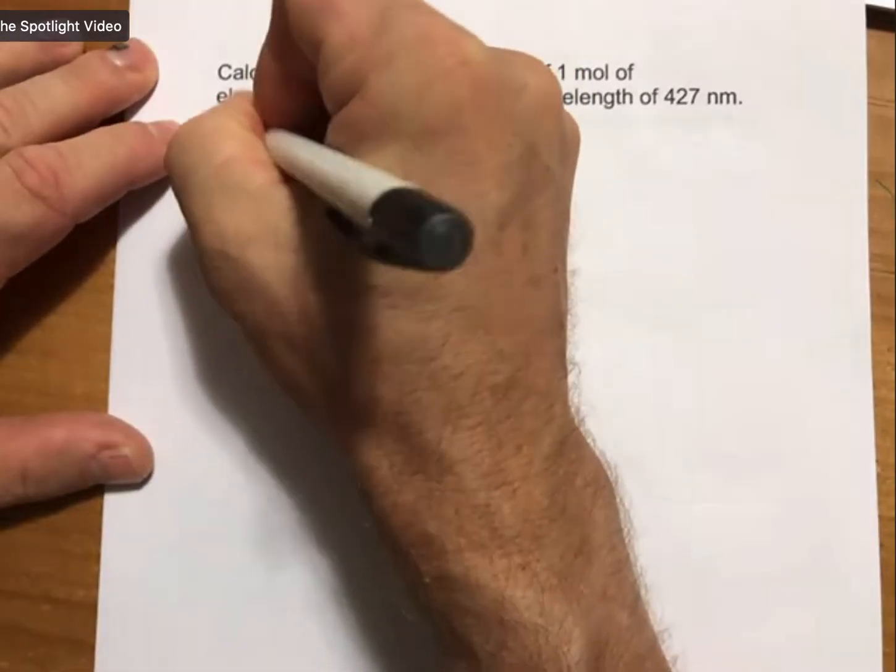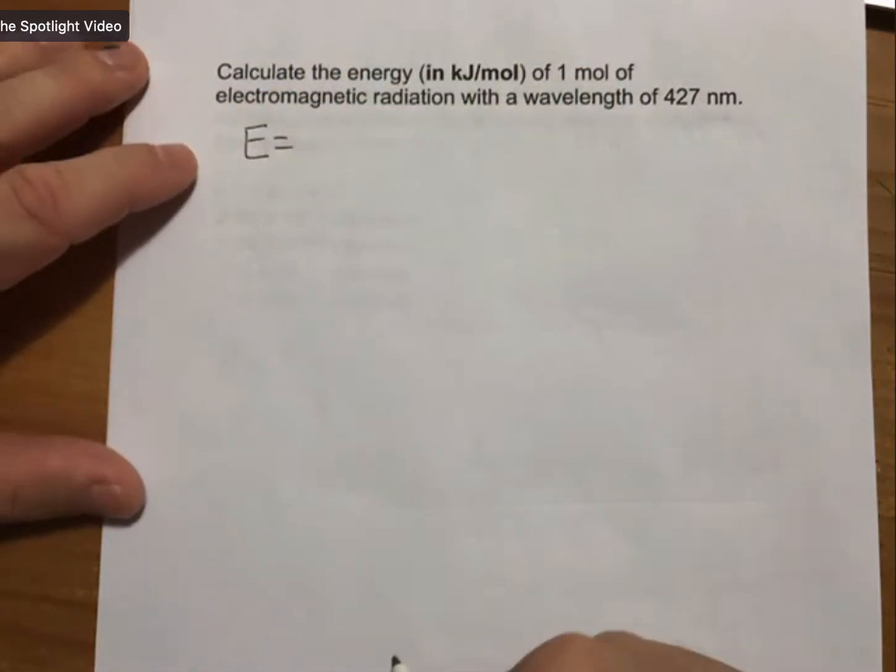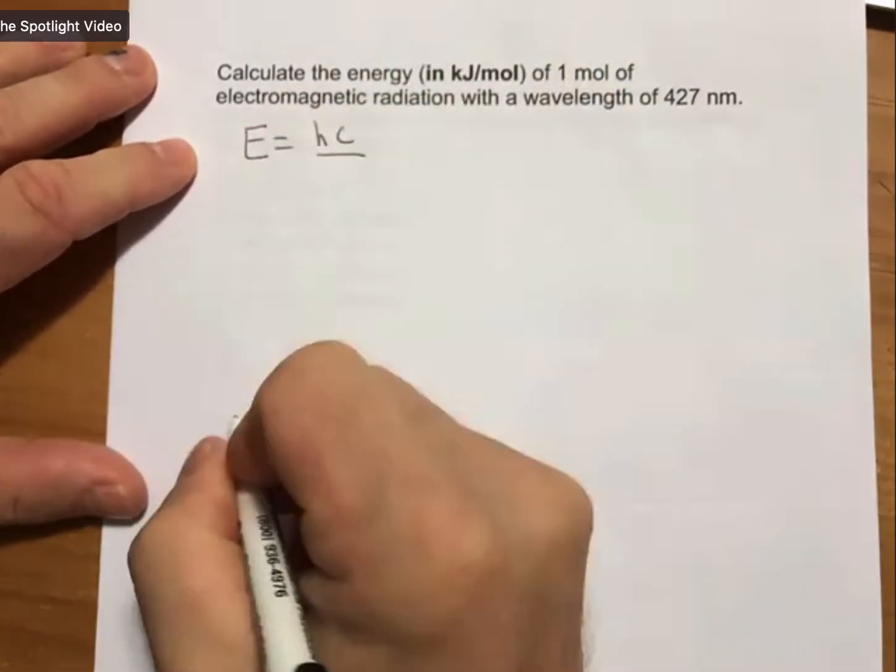We're going to use the equation that we built that says energy equals Planck's constant times the speed of light over wavelength.